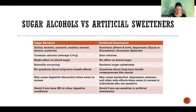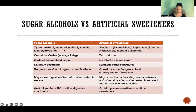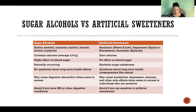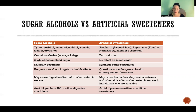Some examples of common sugar alcohols are xylitol, sorbitol, mannitol, maltitol, isomalt, lactitol, and erythritol. Those are all sugar alcohols and I'll tell you more about those in just a second.